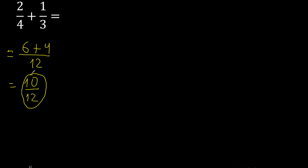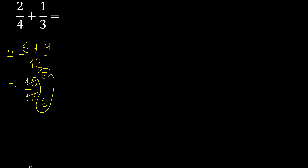This can be simplified because both numbers can be divided by the same number. Divided by 2: 10 divided by 2 is 5, 12 divided by 2 is 6. We are finished because 5 and 6 cannot be divided by the same number.